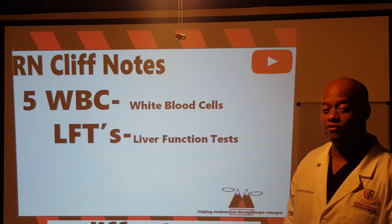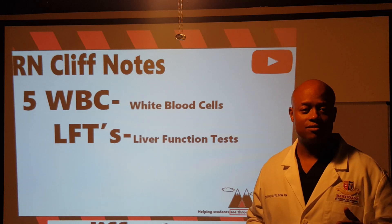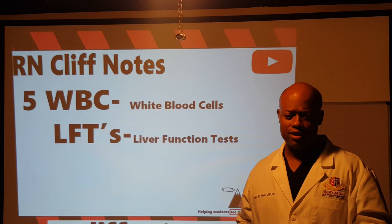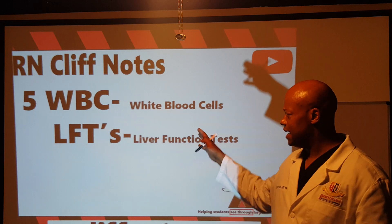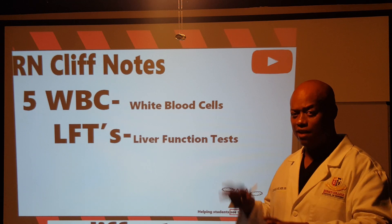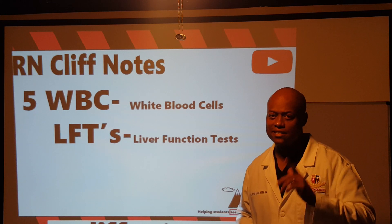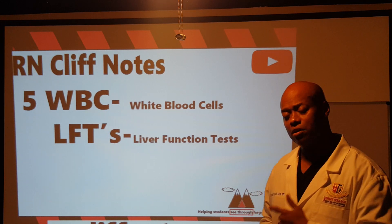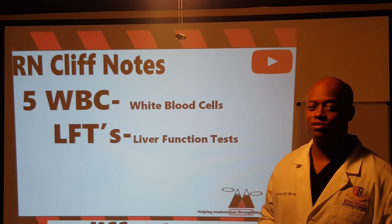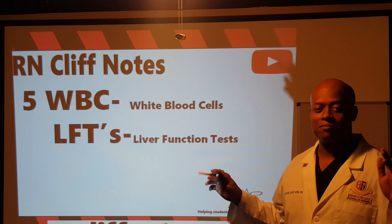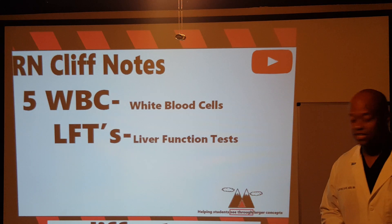With the number five, we're going to see it come into play when we start talking about white blood cells. Whenever I say K, I mean thousand, so the WBC range is 5K to 10K, meaning 5,000 to 10,000. LFTs — liver function tests — are another segment where we're going to use that magic number five, combined with the number three in a special way.